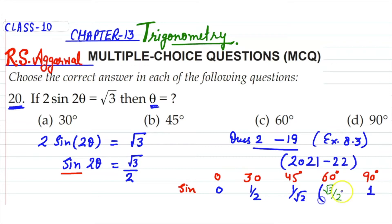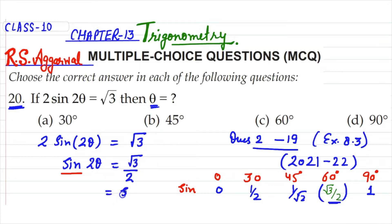So you have to look at this value. Because there is a sine in the question, you check the sine row. Which angle gives that value? We can see that √3/2 is the value of sin 60°. So sin 2θ is equal to sin 60°.